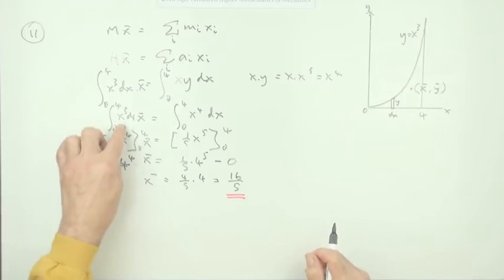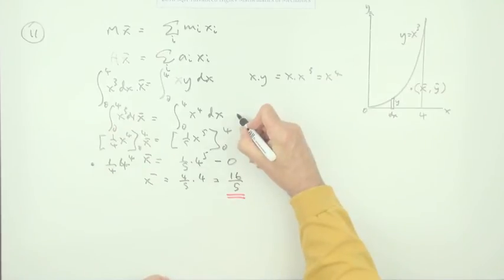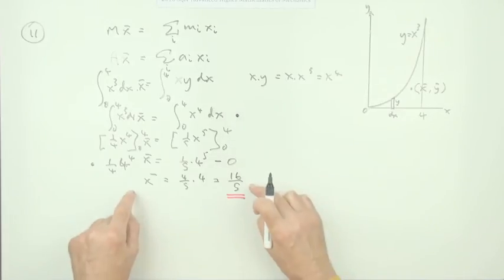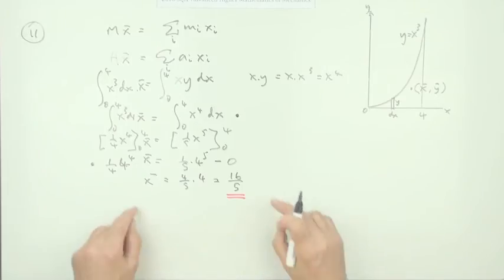There was another mark for ending up with the area should equal this integral here. The area times it should equal this integral. But there's no final mark stated for this though. That seemed to come at the end.